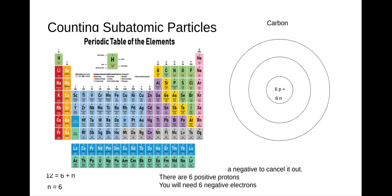Let's put the electrons around the carbon nucleus. The first ring goes with row one of the periodic table, and the second ring goes with row two. Carbon is located in the second row, so it's going to have two rings or two energy levels around it. On our first energy level, which goes with the first row of the periodic table, we have two elements there, so we can put two electrons on that first ring.